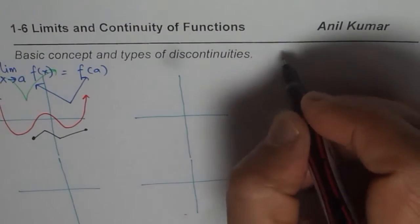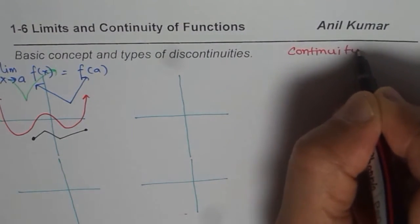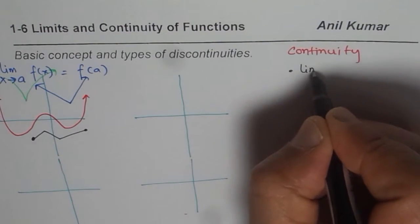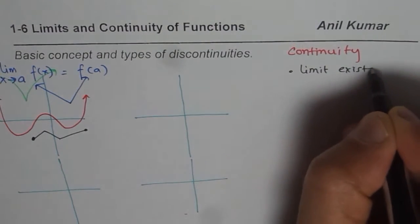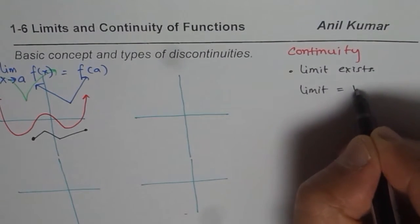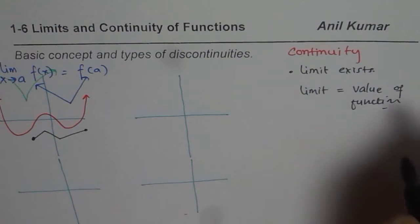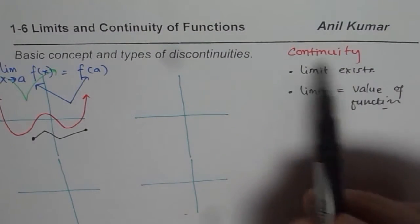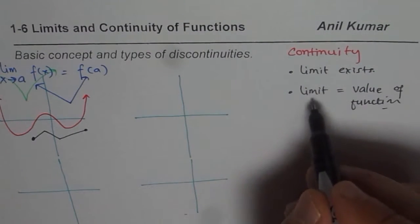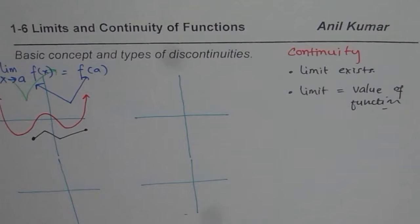To summarize continuity at a point: first, the limit exists; and second, the limit equals the value of the function at that point. In general, at a point, if the limit exists and that limit is equal to the value of the function, then the function is continuous.